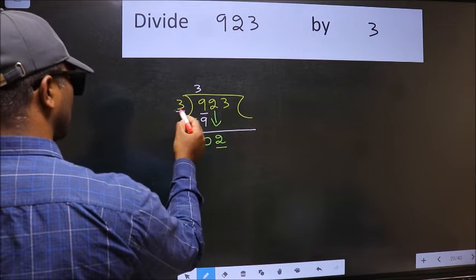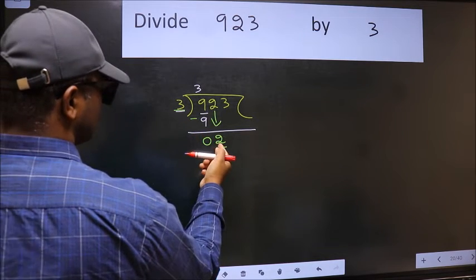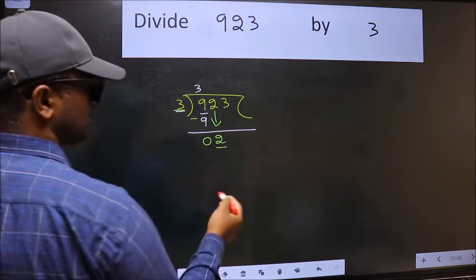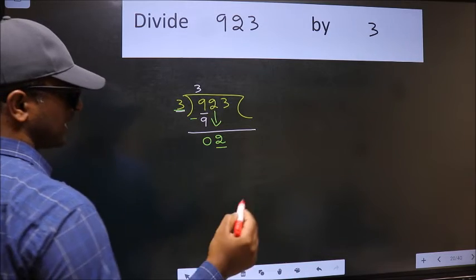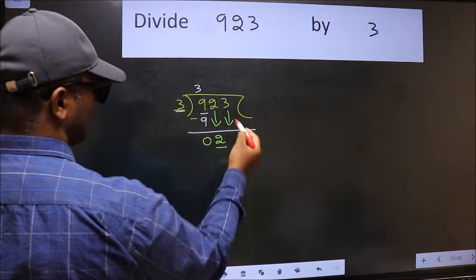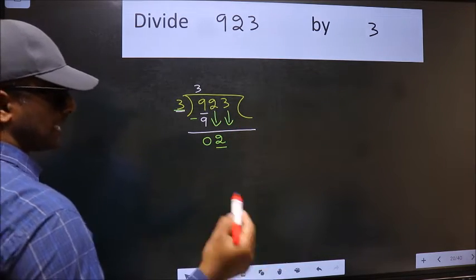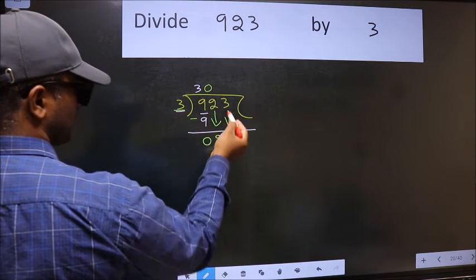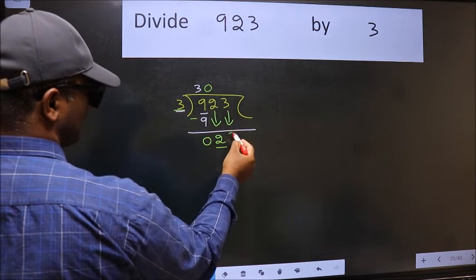Now here we have 2 and here 3. 2 is smaller than 3, so we should bring down the second number. And the rule to bring down the second number is we should put 0 here. Then only we can bring this number down.